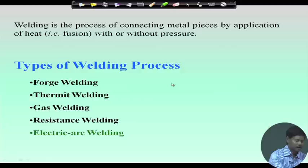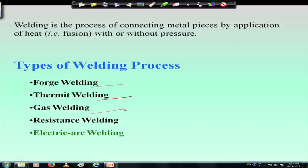Weld is basically a process of joining metal pieces by the application of heat with or without pressure. Different processes of weld connections are there: forged welding, thermite welding, gas welding, resistance welding, and electric arc welding. Nowadays, electric arc welding is the most popular type of welding seen in today's market.